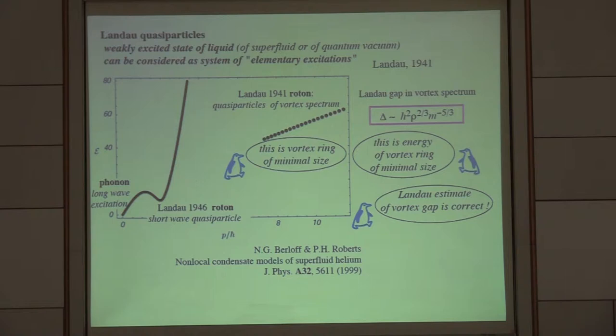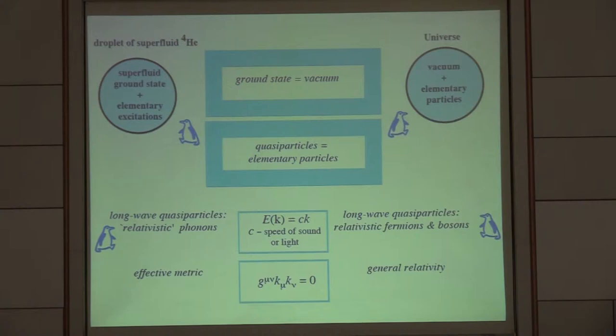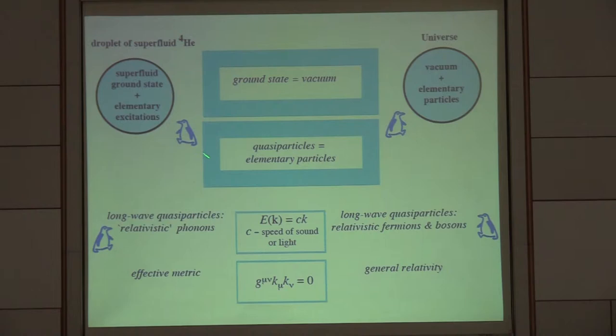What Landau started to do is consider superfluid helium-4, the bosonic liquid, as the mixture of two liquids. One of them is the ground state, the superfluid liquid, and another one is excitations. In terms of the excitations, there's a whole story about rotons and phonons, but anyway, these are excitations above the ground state. The superfluid part is the ground state, and excitations - rotons, phonons, quasiparticles - are the excitation above the vacuum.